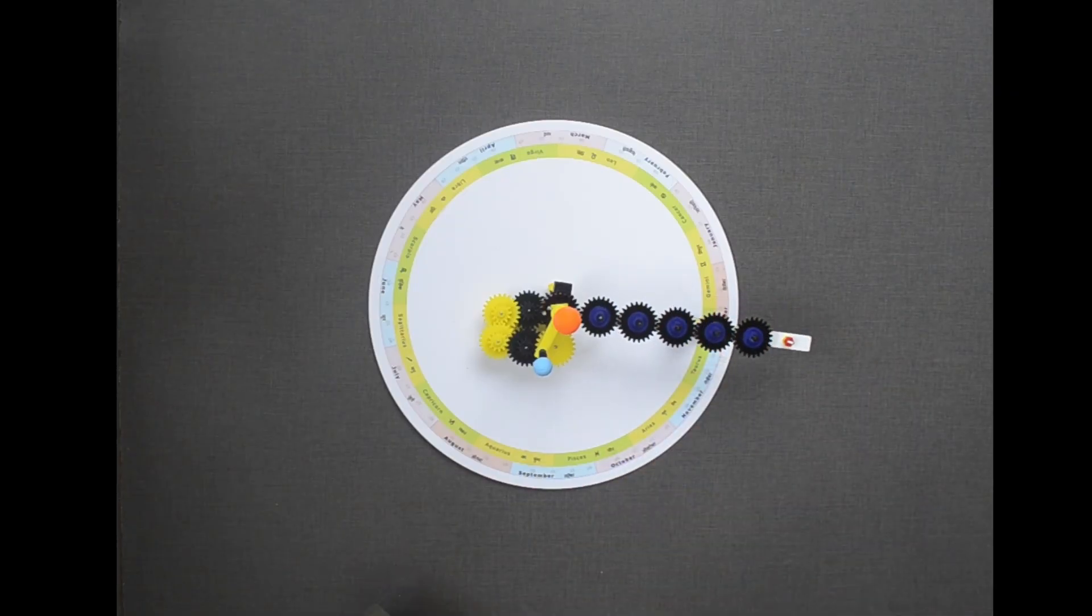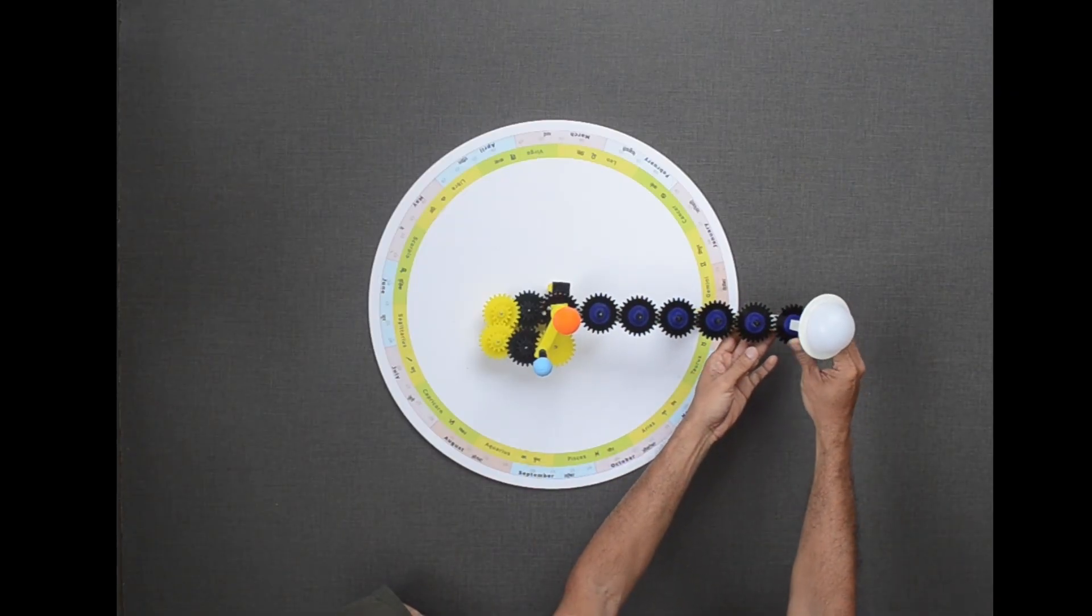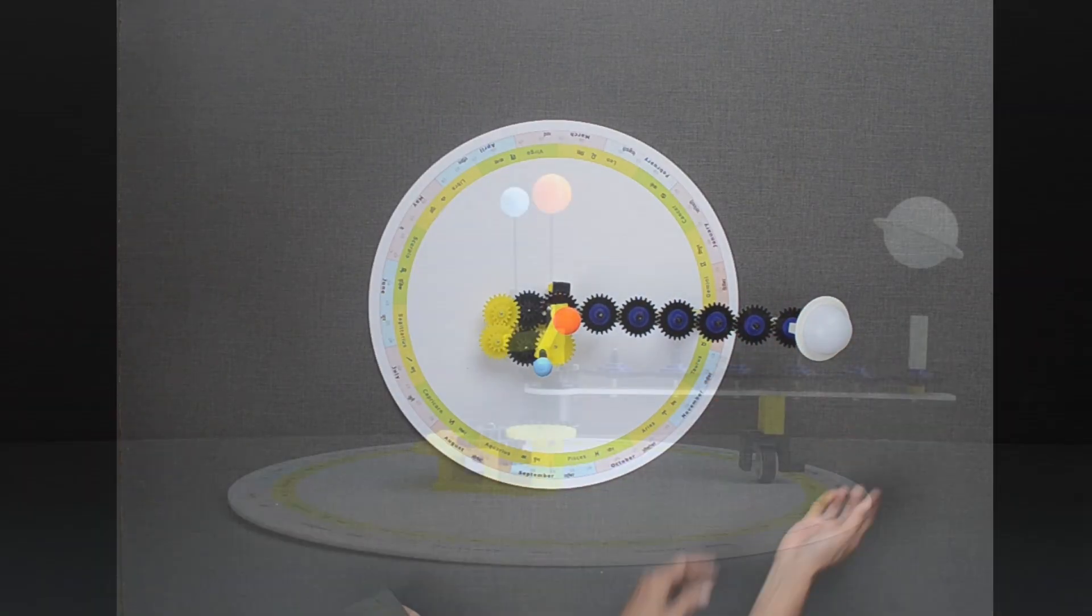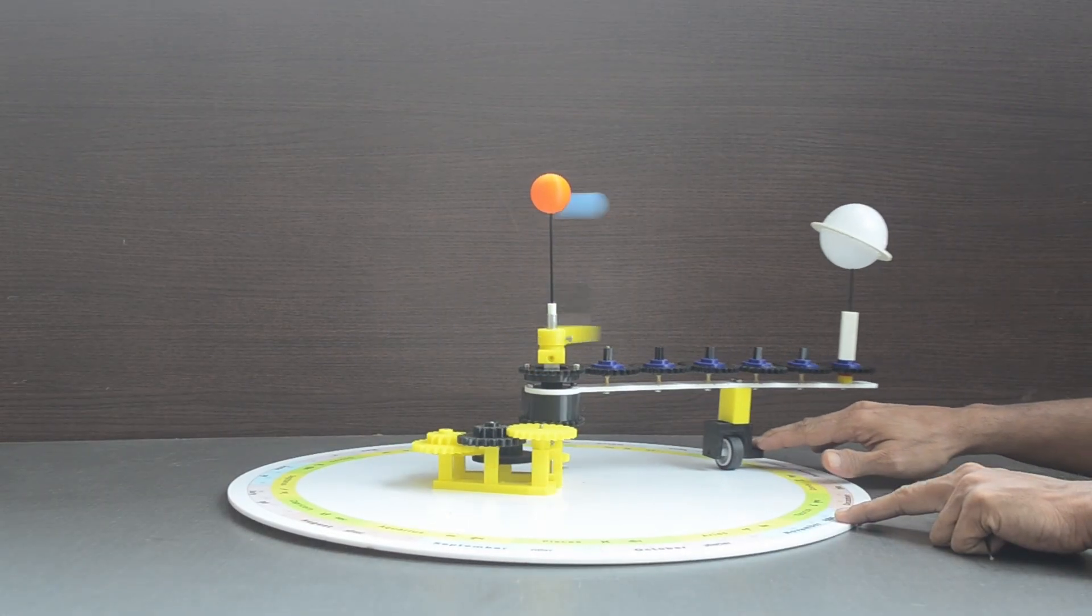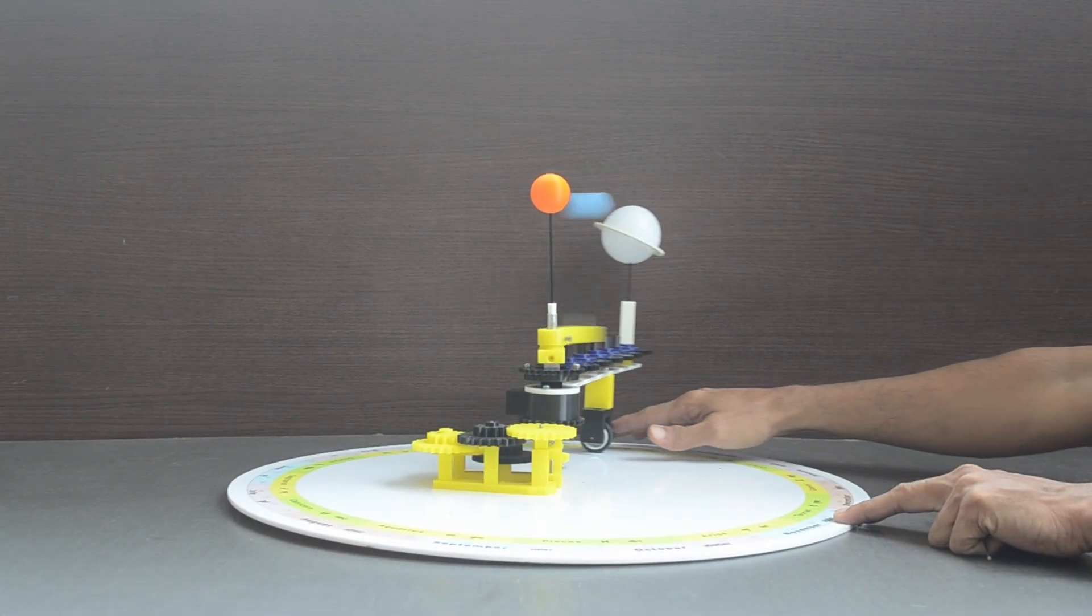We will replace this small Saturn with the bigger one. In this view from the front, observe the tilt direction of Saturn's axis and its ring. It never changes.